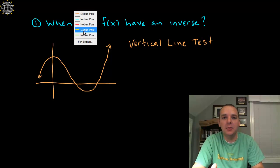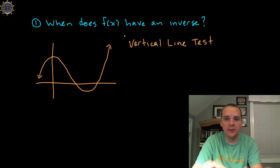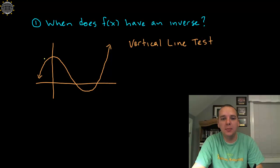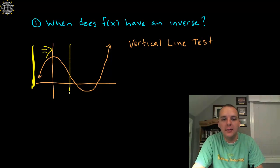This test helped us determine when a graph represented just a function, not an invertible function or anything like that. And it said that if you can pass a vertical line, imagine taking this vertical line here and moving it from left to right across this graph right here. At any given time, as long as it only touches the graph at at most one point, then it represents a function.